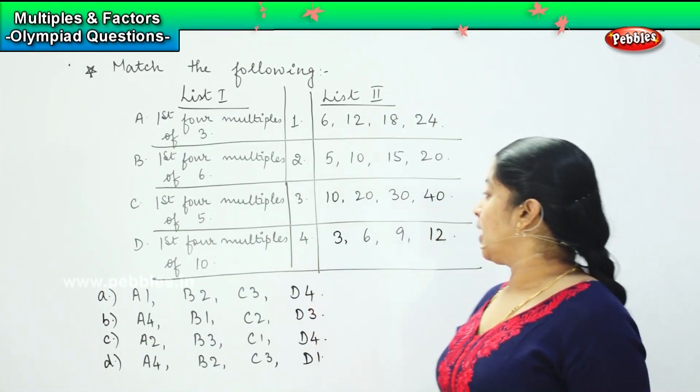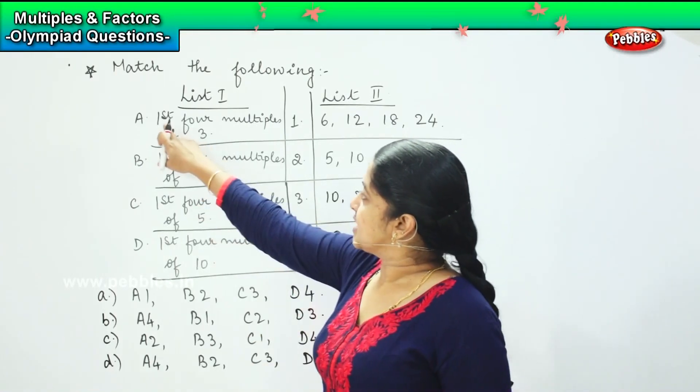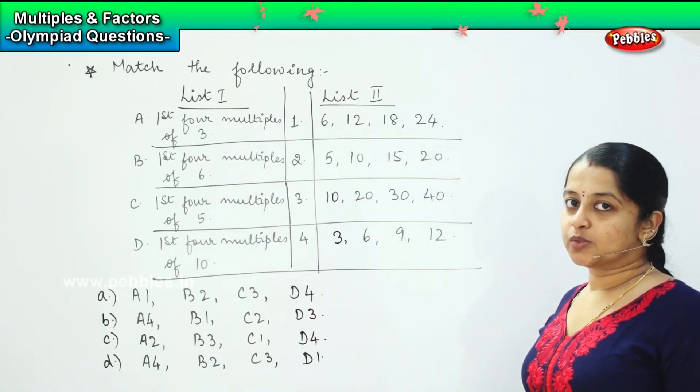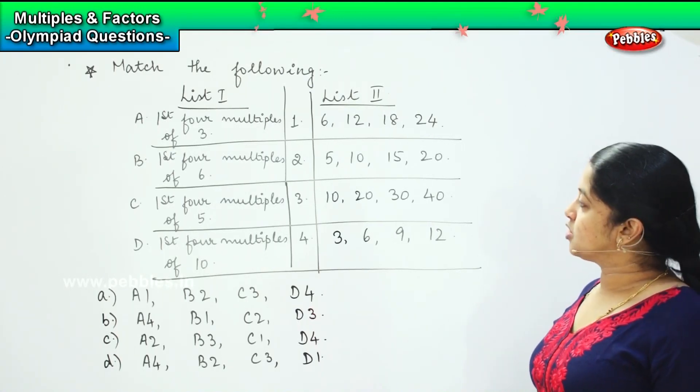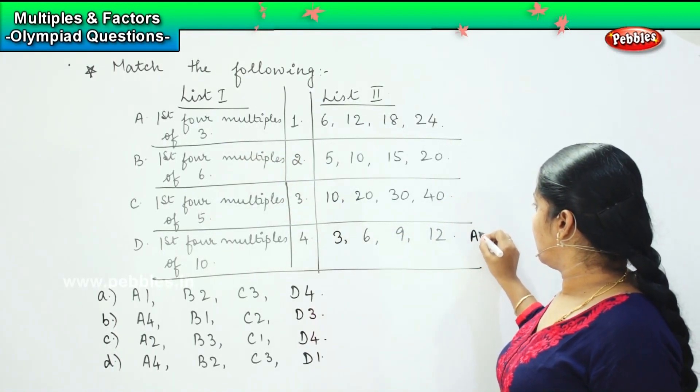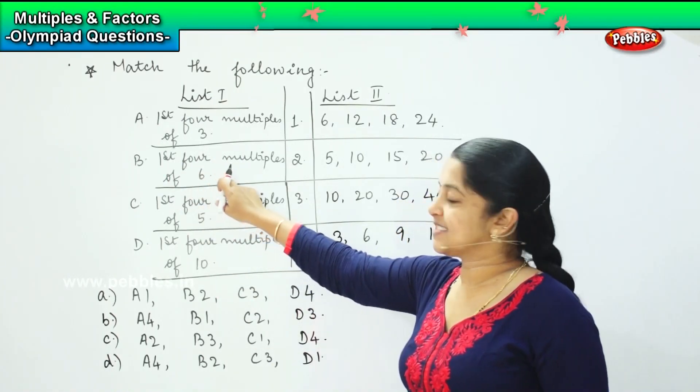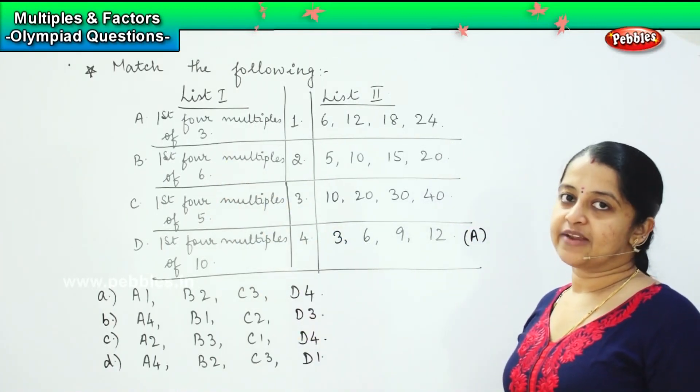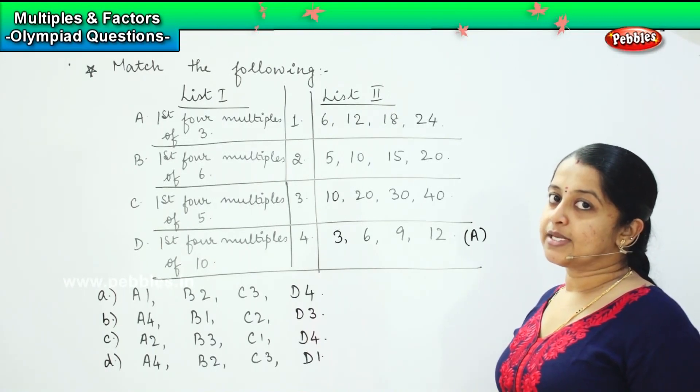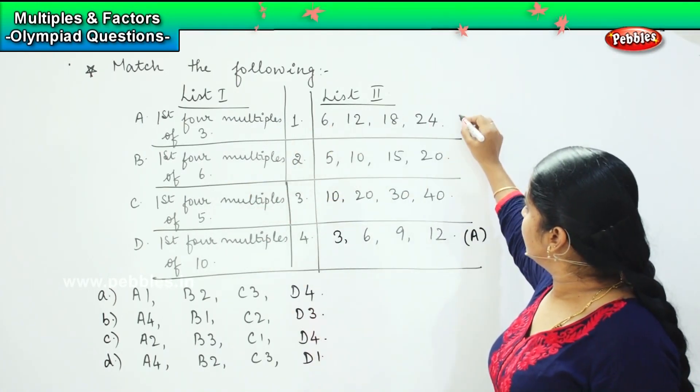So now we are going to match this question with the right answer. The first one says first four multiples of three. We know the multiplication of three, right? So three ones are three, three twos are six, three threes are nine, three fours are twelve. So where can you find it? Yes, so A will be matching with the fourth one. The next one says first four multiples of six. Do we know the table of six? So shall we say six ones are six, six twos are twelve, six threes are eighteen, six fours are twenty-four. So which means this will go with the first one.